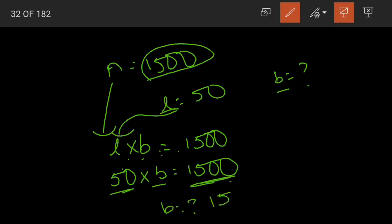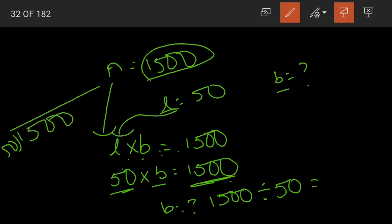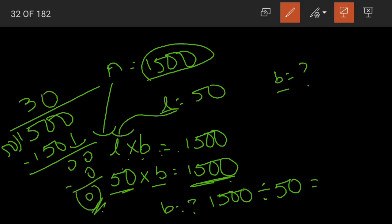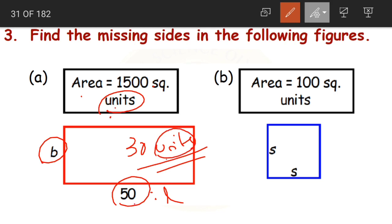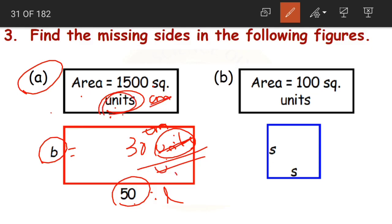B equals 1,500 divided by 50 equals 30. The breadth is 30 units. Since the area is given in square units, the length and breadth are in units. So the breadth of the given rectangle is 30 units.